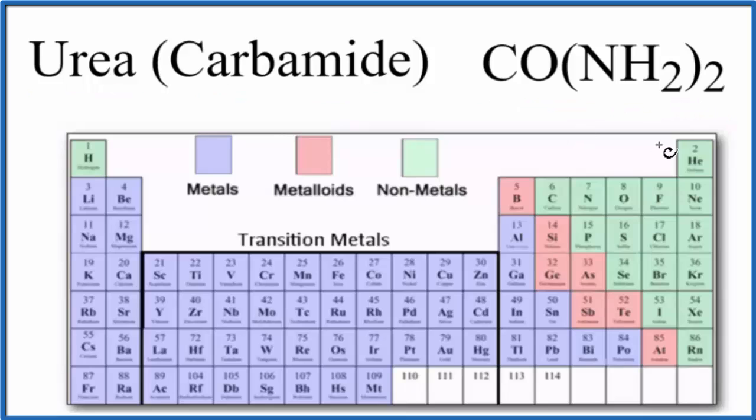Let's look at the periodic table here. Urea, we have carbon. Carbon, that is a non-metal. We have oxygen right here. That's a non-metal. We have nitrogen. That's a non-metal. And then we have hydrogen over here, which is a non-metal. So we have all non-metals.